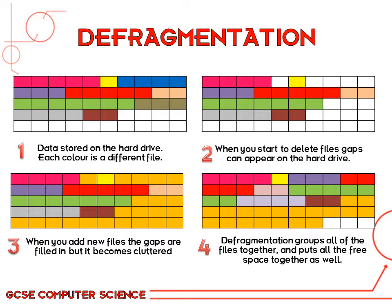For step 3, when you start adding new files or creating new documents, the computer fills in the blank gaps and the file starts getting separated, and the whole drive becomes cluttered or fragmented. For step 4, what defragmentation does is group all of the files together by similar type and then puts all the free spaces together at the end. This makes the hard drive run much quicker and it's easier to find your files.